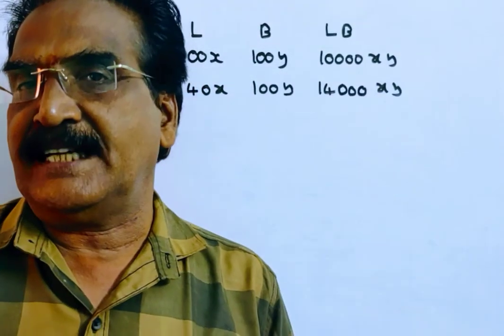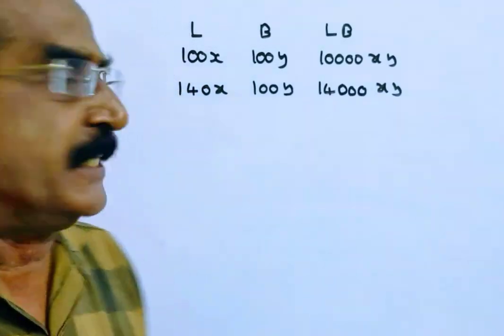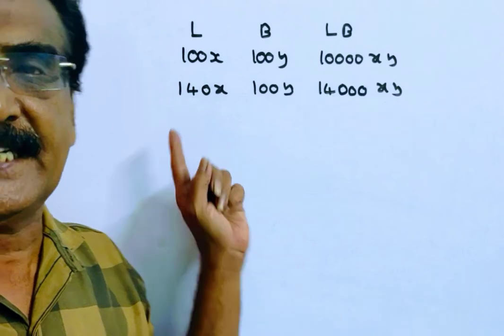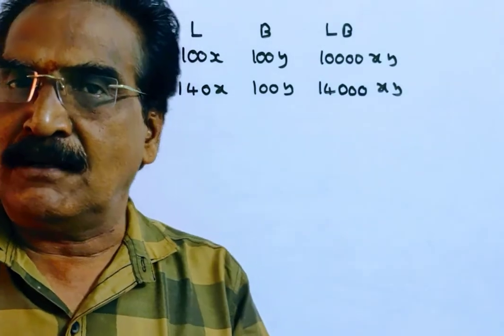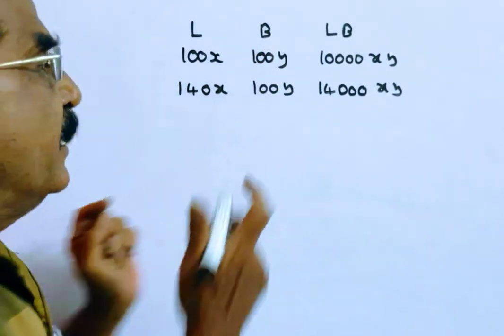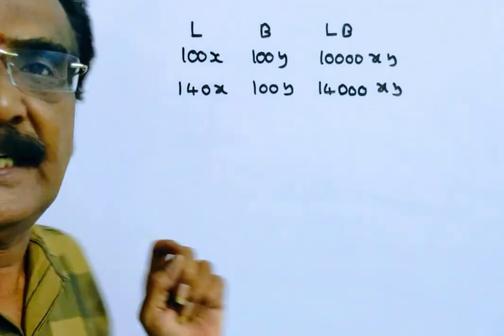Now, the length of the rectangle is increased by 40%. So the new length is 140x and keeping the breadth constant, so breadth is same 100y. Now the area is 14,000xy.